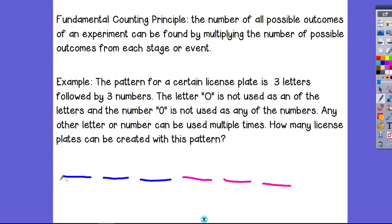The first spot, the first stage of the experiment is this first letter in the license plate. Since O is off limits and there's 26 letters in the alphabet, that means I actually only have 25 letters available for my license plate.